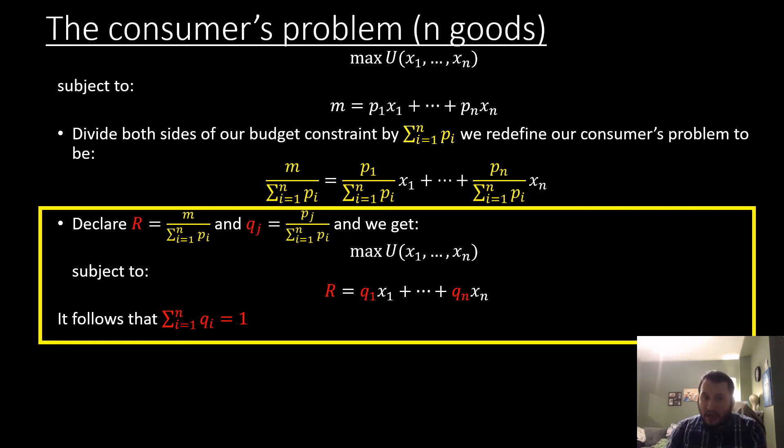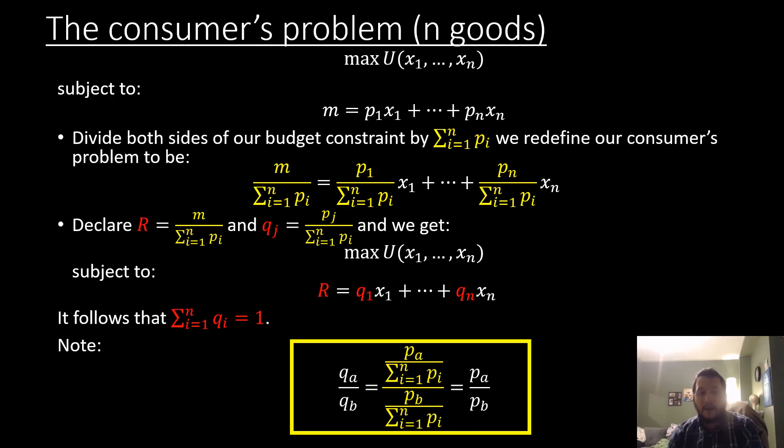Each transformed price qj is going to be equal to pj over the summation of all prices. With that we get this case where we're maximizing our utility subject to this new type of constraint or this transformed constraint. It follows that the summation of these new prices are going to sum to one. So that's what we mean when we're saying that all our prices are going to sum to one. It's these transformed or normalized prices that we're talking about.